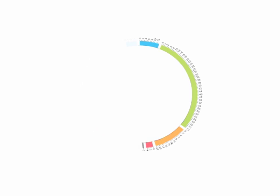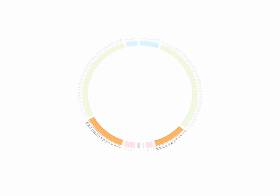Achievement for each assessment has been color-coded and extends from the top of the circle to the bottom: blue for Level 4, green for Level 3, orange for Level 2, red for Level 1, and black for achievement that is not at Level 1.